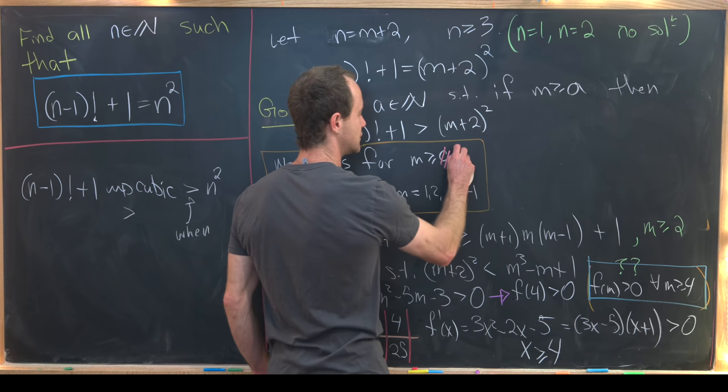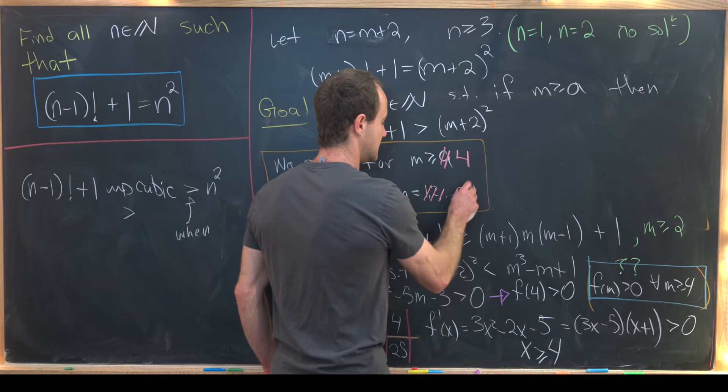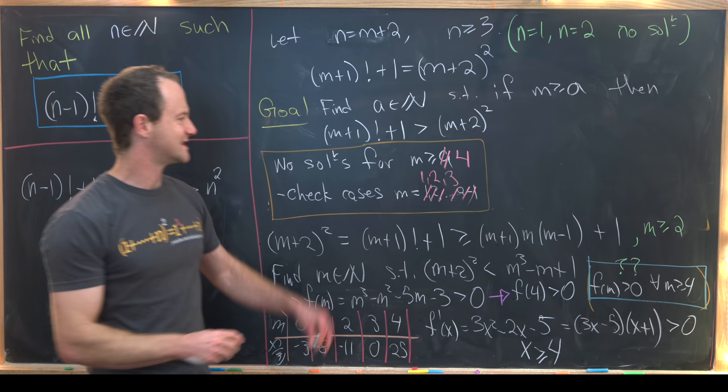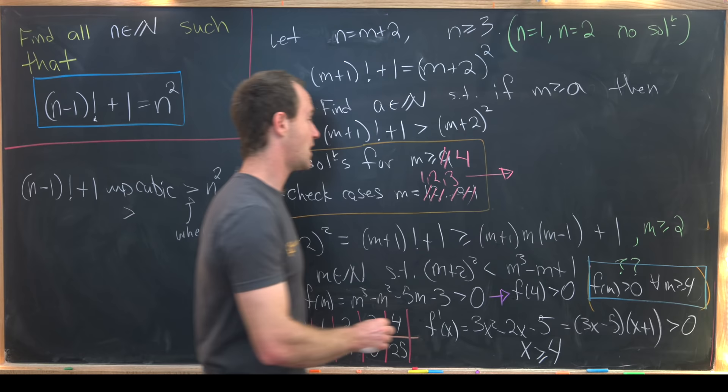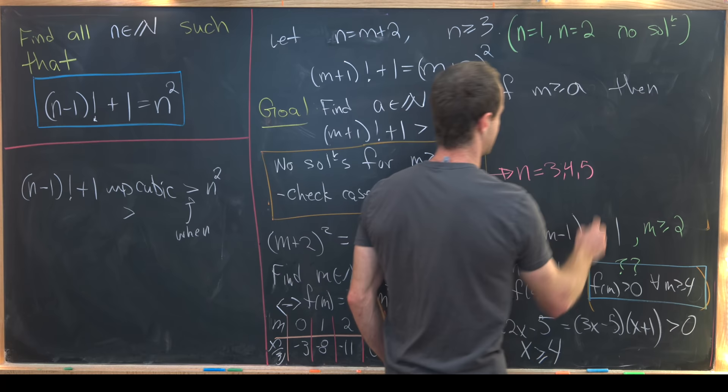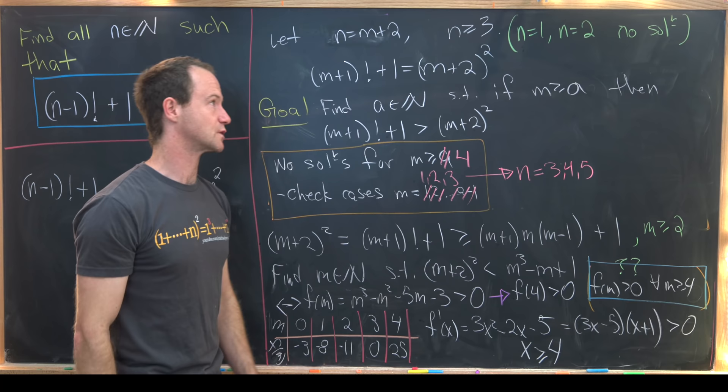Which means we can go over here to our orange box and we see that there are no solutions for m bigger than or equal to 4. Which means all we have to do is check m equals 1 2 and 3. But notice m equals 1 2 and 3 corresponds to n equals well 1 plus 2 which is 3 4 and 5.